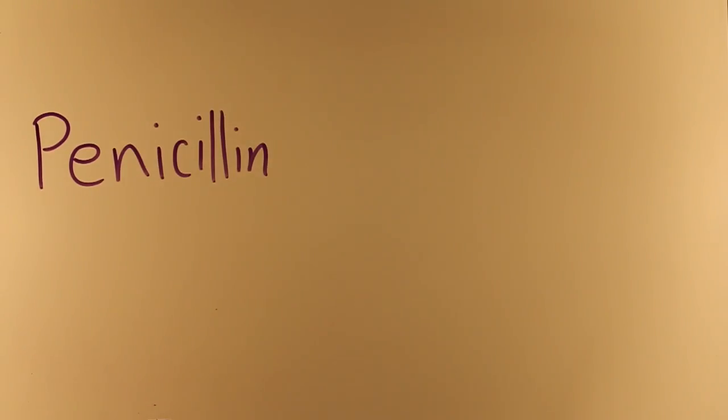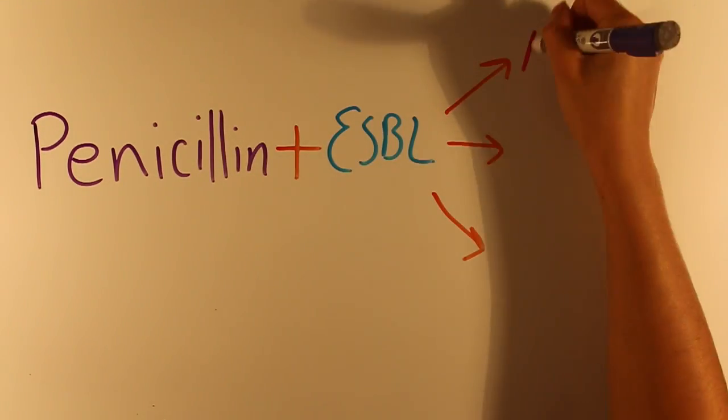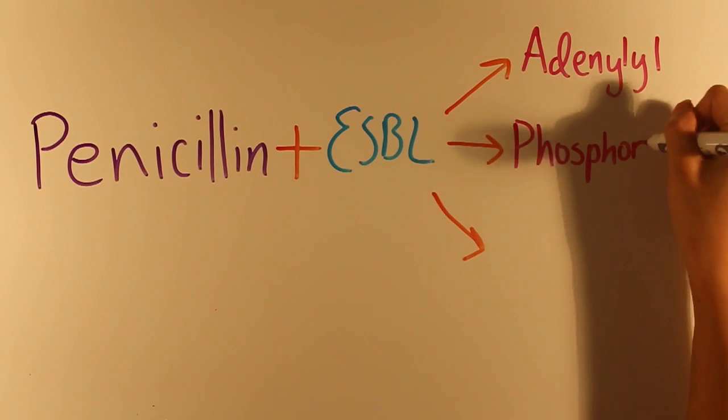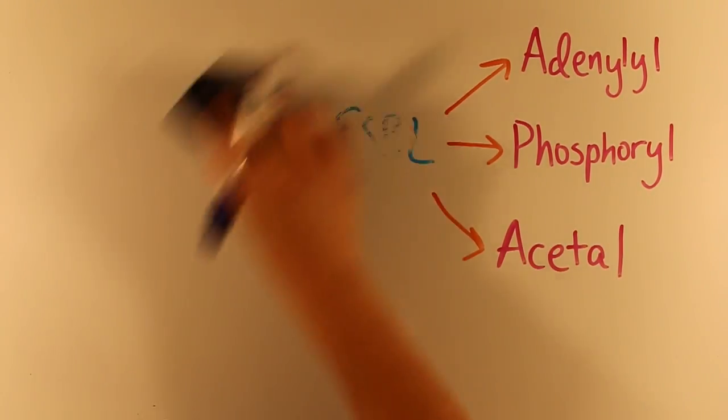Sometimes our ESBLs change the functional groups of these antibiotics. Adenylyl, phosphoryl, or acetyl groups are added to the periphery of the antibiotic molecule. The chemical substitution inactivates our enemies and renders them useless.